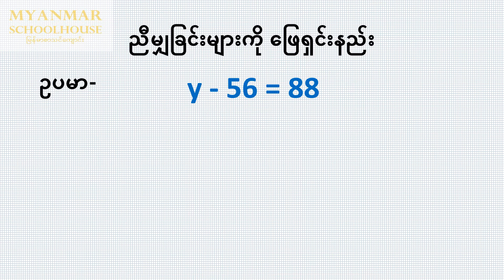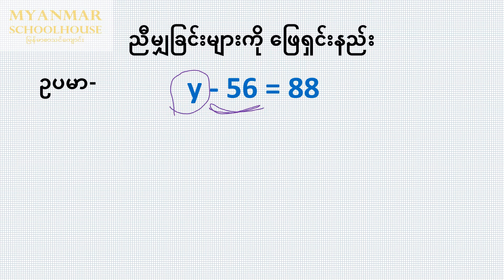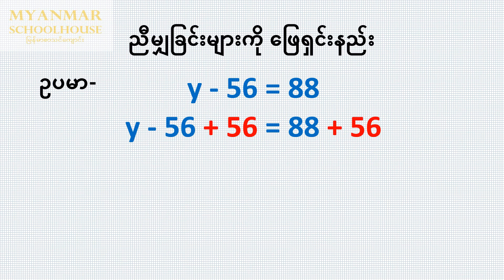The equation y minus 56 equal to 88. We need to find y. The equation has negative 56, and the equation is 20 and 56. The equation is negative 56 and positive 56, which cancel out.